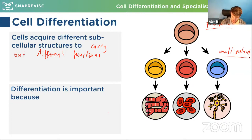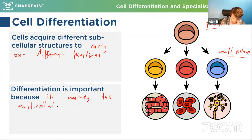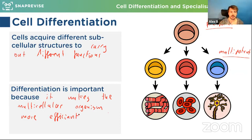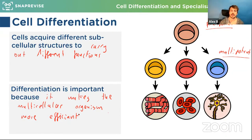Differentiation is important because it makes the organism more efficient. Cells can be specialized for their role — blood cells are specialized to carry oxygen, muscle cells to contract. If every cell was a jack of all trades, none of them would be very good at anything. The more specialized you are for one particular function, the better you can perform that function. This allows multicellular organisms to be much more efficient than if they only had one type of cell.